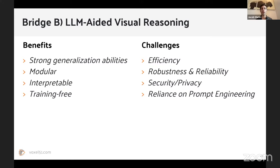Of course there are challenges too. Efficiency is one issue — you're running many models and many LLM queries since you're using them as orchestrators, which can be slow and costly, especially with complex prompting techniques. Robustness, reliability, security, and privacy are also issues. And there's reliance on prompt engineering, though we've already seen auto-prompting and self-refining prompting techniques from OpenAI and others, so that may not always be a necessity.